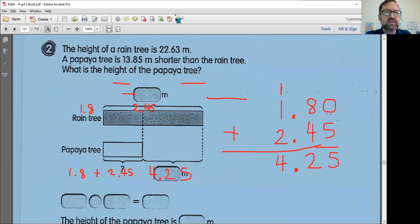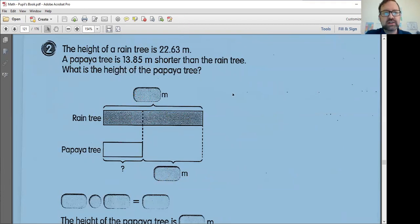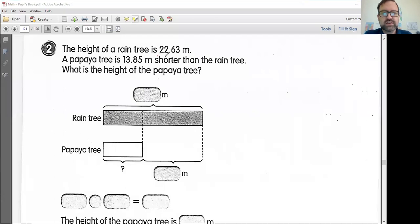The height of a rain tree. I'm not sure what a rain tree is. The height of a rain tree is 22.63 meters. A papaya tree, oh, I know what that is, is 13.85 meters shorter than the rain tree. What is the height of the papaya tree? So we know the height of the rain tree. It is 22.63. And we know that the papaya tree is 13.85 shorter. The height of the papaya tree is not 13.85 meters. It is 13.85 shorter than 22.63. So what kind of problem are we doing?